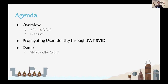The agenda for the talk is: I'll quickly do an overview of the OPA project and talk about its features, then Madhu is going to talk about propagating user identity through JWTs. And finally, we'll see a demo of how Spire and OPA are going to work together for OIDC Federation.